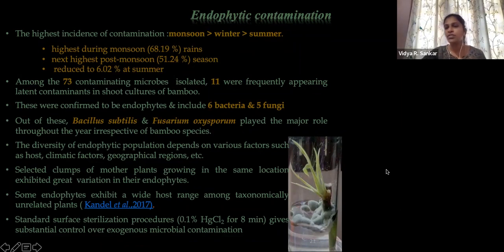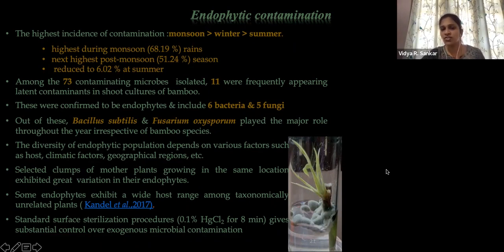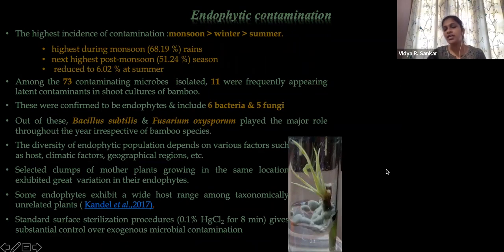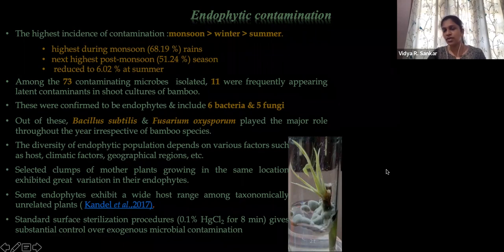The endophyte population depends on various factors such as host, climatic factors, and geographical regions. Selected clumps of mother plants growing in the same location also show great variation in their endophyte populations. Some endophytes accept a great host range in types of plants. For micropropagation, we commonly adopt treatment with mercury chloride at 0.1% for eight minutes, which controls most of the exogenous microbial contamination.